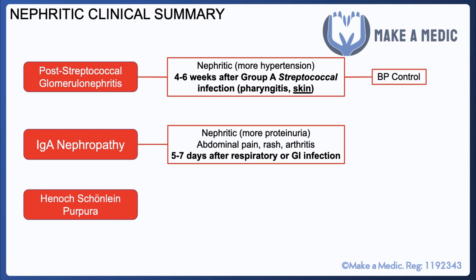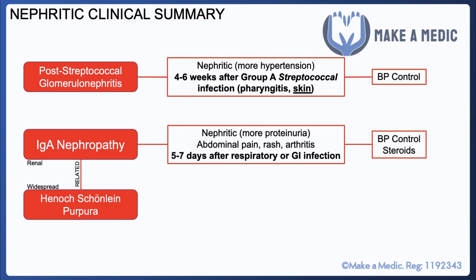The reason IgA nephropathy happens is thought to be because certain susceptible individuals produce an abnormal form of IgA. With a mucosal infection like a respiratory or GI infection, IgA being our primary mucosal antibody will be produced in large numbers. In susceptible individuals who produce a slightly abnormal form of IgA, the immune system will then recognize this abnormal IgA and produce IgG antibodies against it, resulting in the formation of an immune complex which can deposit in various tissues across the body, in particular the kidneys. Management again focuses on controlling blood pressure and steroids may also be used.